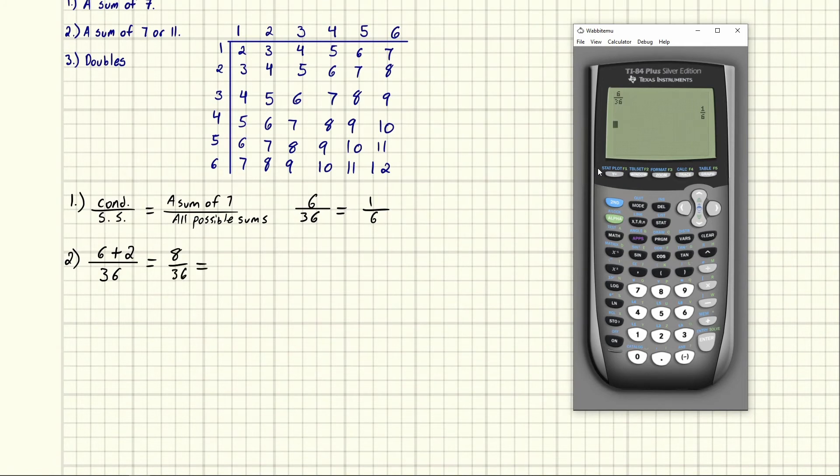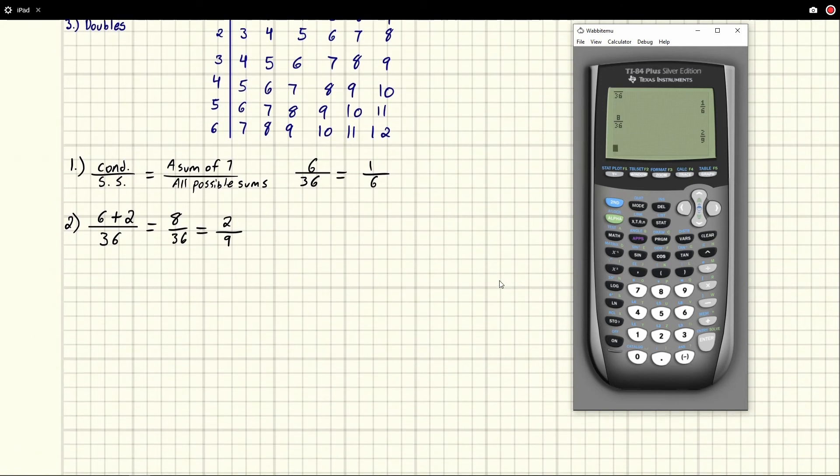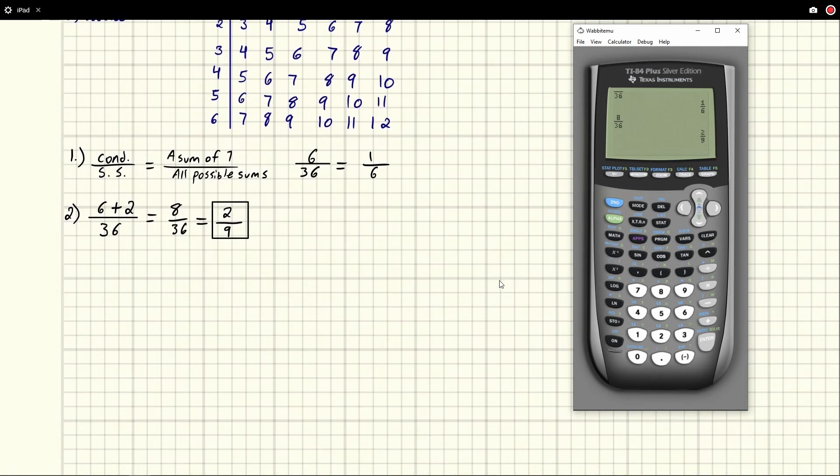That's going to reduce. So eight divides by four, so that's going to be two. 36 divides by four, that's going to be nine. We can check it. We're just going to go ahead and just pop it in as a fraction. That's going to be eight over 36, and we get two ninths. So we know we're good to go. And we should be boxing our answers too. Make it easy for the instructor to see our work and clearly see where our answers are.